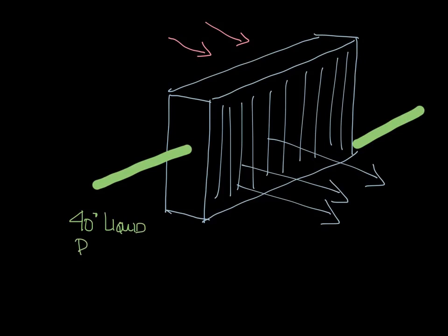You have say 40 degree liquid refrigerant going into your evaporator and after the air passes through and the heat transfer happens, it comes out as a 50 degree vapor. So this is your evaporator.